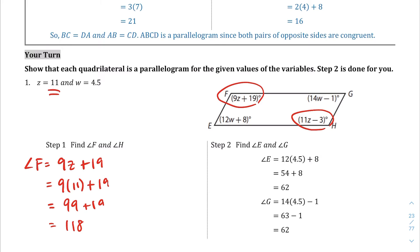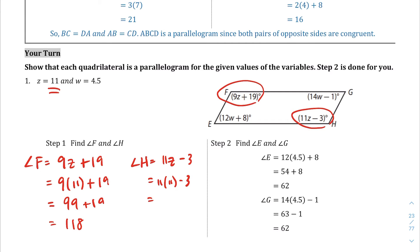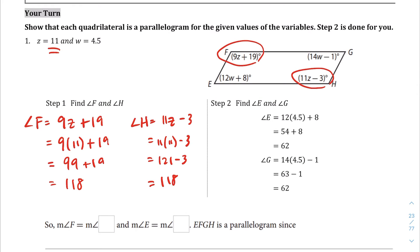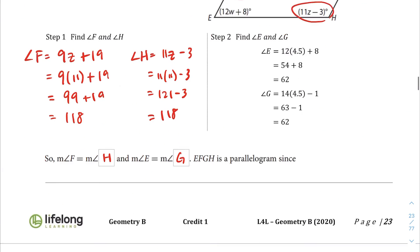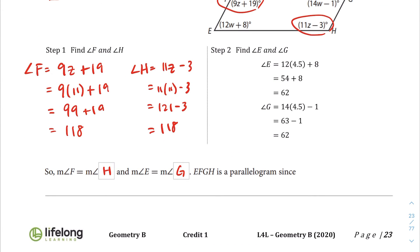And then angle h was 11z minus 3, 11 times 11 minus 3, 121 minus 3, which ends up as 118 as well, and they're both equal. So the measure of angle f was 118, the measure of angle e we were told was right here, 62. Sorry, what am I doing? We're not putting the values, we're saying f is equal to h and angle e is equal to angle g. The opposite is a parallelism since theorem 3. So you can write the explanation in word form, or I'm just going to write theorem 3.